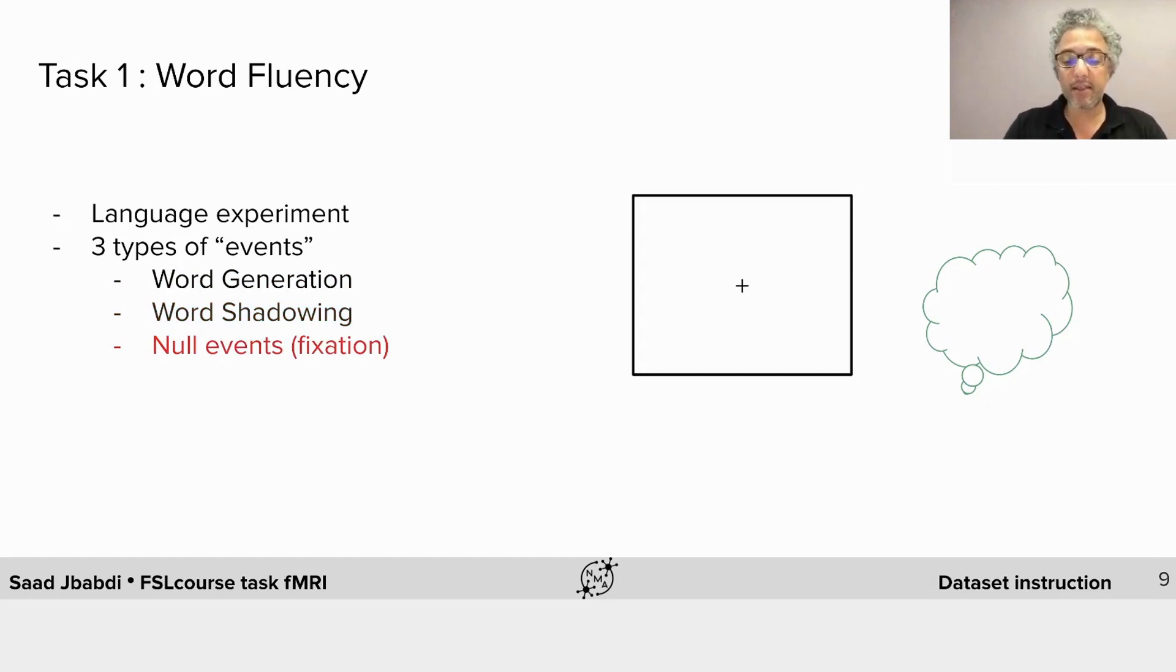The third event is a simple baseline event where the subject is shown a fixation cross. The gaze must remain on the cross.